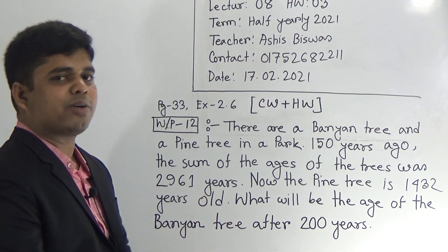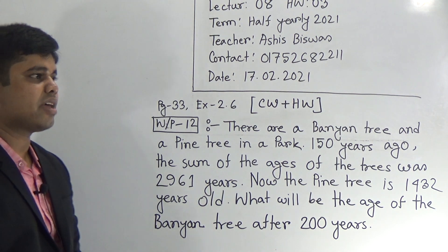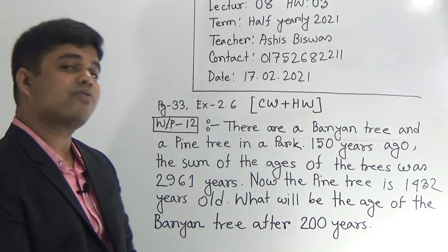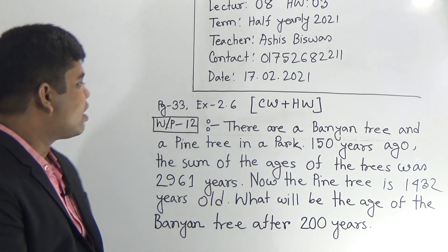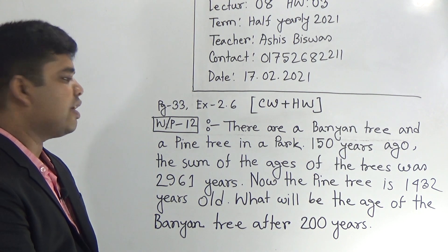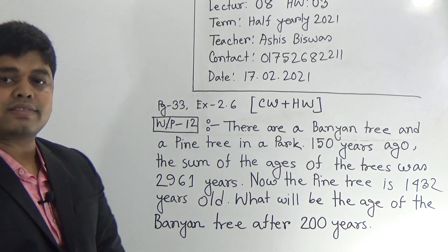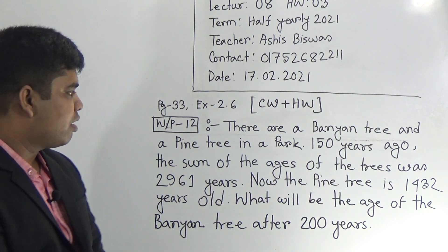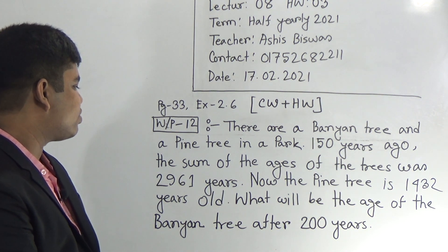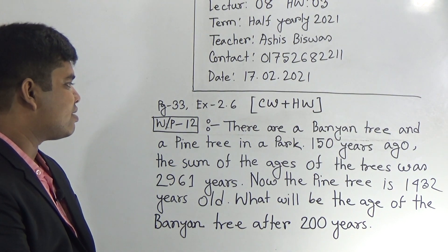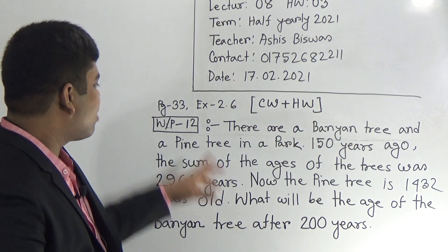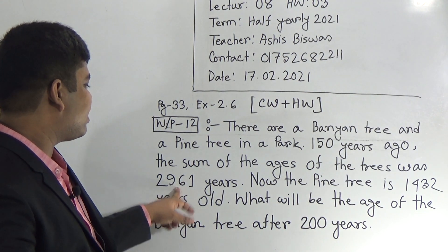My dear student, this is a word problem. So before starting to solve this math, I have already told you many times that we shall make a plan. If you can make a plan, then it is easier for you to solve the odd problem. There are a banyan tree and a pine tree in a park — that means there is a park which has a banyan tree and a pine tree. 150 years ago, the sum of the ages of the banyan tree and the pine tree was 2,961 years.